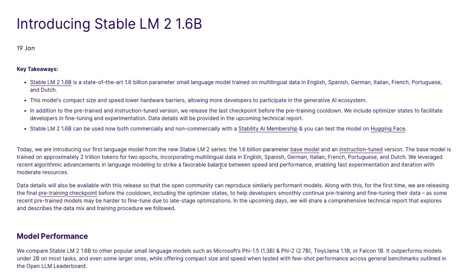Anyway, it's a new model and a very different Stability AI — a 1.6 billion parameter model. The good thing about this model is it's multilingual. Despite being only 1.6 billion parameters, it is available in English, Spanish, German, Italian, French, Portuguese, and Dutch. They have built this model with the goal of deploying it on edge devices — tiny devices on which you can run these systems.